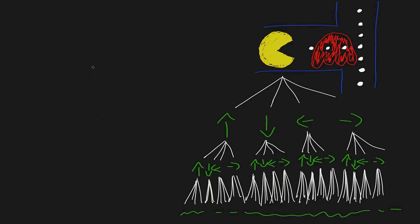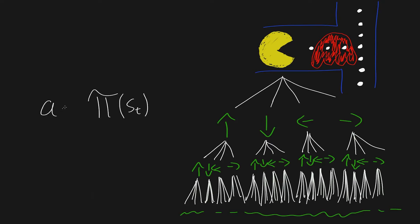Pi is a function. We take in a parameter — specifically the state — so the policy takes in some input, the state, and outputs some action. When dealing with stochastic policies, stochastic meaning there's a distribution of what can happen with probabilities involved, instead of mapping to a specific action we sample an action from the policy.